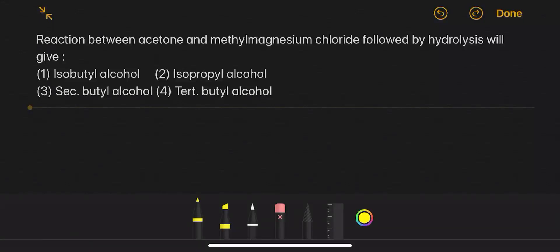Reaction between acetone and methyl magnesium chloride followed by hydrolysis will give - we know that ketone on reaction with Grignard reagent forms tertiary alcohol. So here, acetone...